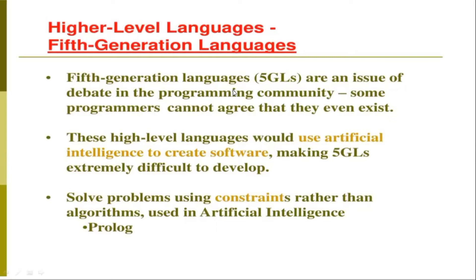Artificial intelligence is when we write a code and that code can create its own code by assessing the environment or situation. This makes fifth generation language extremely difficult to develop. Some problems are solved using constraints rather than algorithms — this is used in artificial intelligence and is called Prolog. The system created in artificial intelligence logs every situation; it keeps a history, like our brain keeps history of past situations, to determine if something will be good or bad based on previous experience.